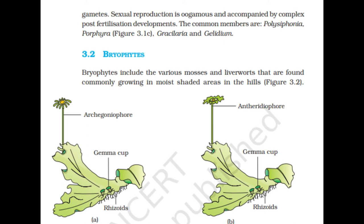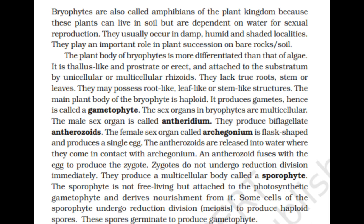Bryophytes include the various mosses and liverworts that are found commonly growing in moist shaded areas in the hills. Bryophytes are also called amphibians of the plant kingdom because these plants can live in soil but are dependent on water for sexual reproduction. They usually occur in damp, humid and shaded localities and play an important role in plant succession on bare rocks or soil. The plant body of bryophytes is more differentiated than that of algae. It is thallus-like and prostrate or erect, and attached to the substratum by unicellular or multicellular rhizoids. They lack true roots, stems or leaves, though they may possess root-like, leaf-like or stem-like structures. The main plant body of bryophyte is haploid and produces gametes, hence called gametophyte.